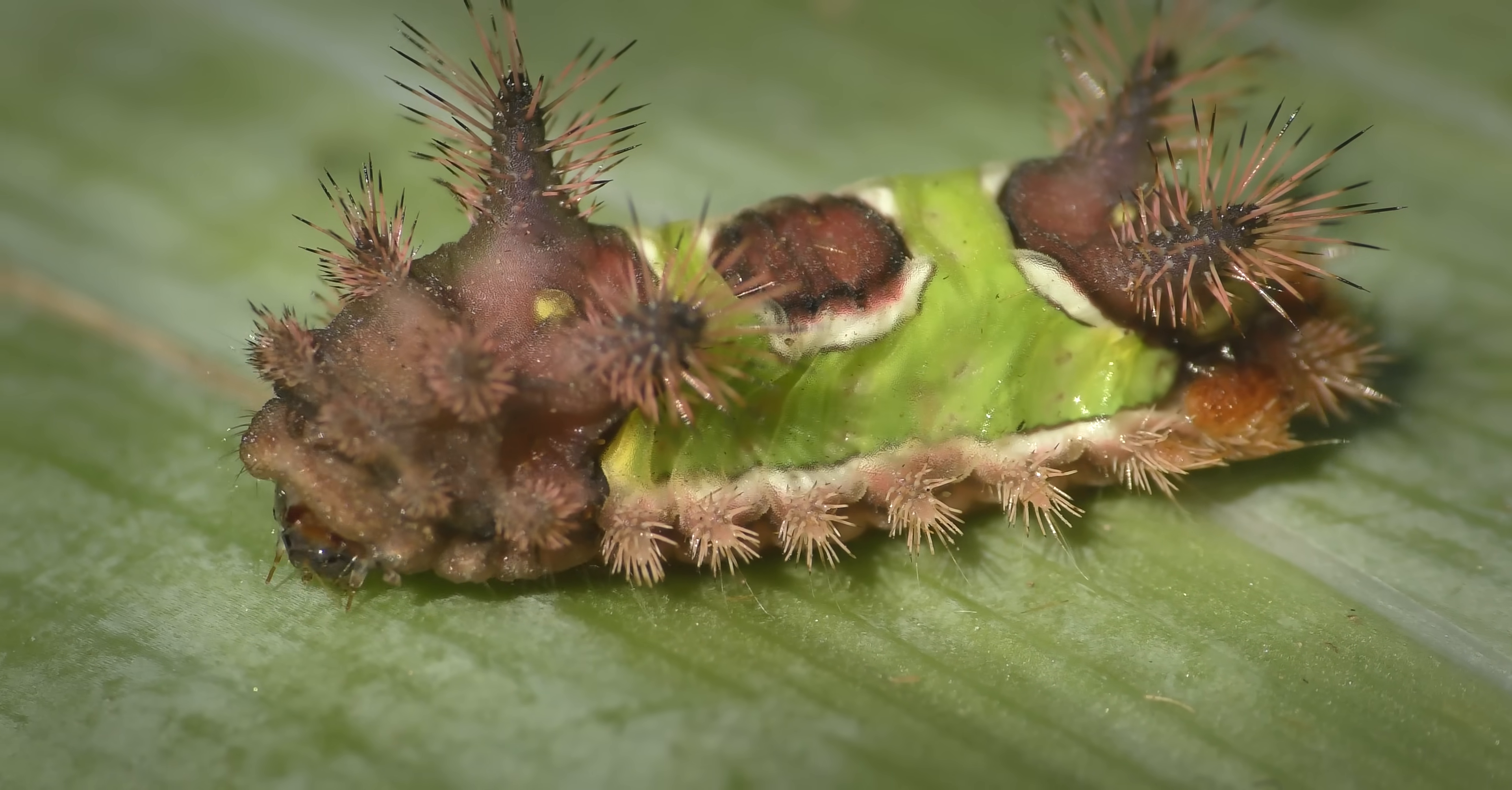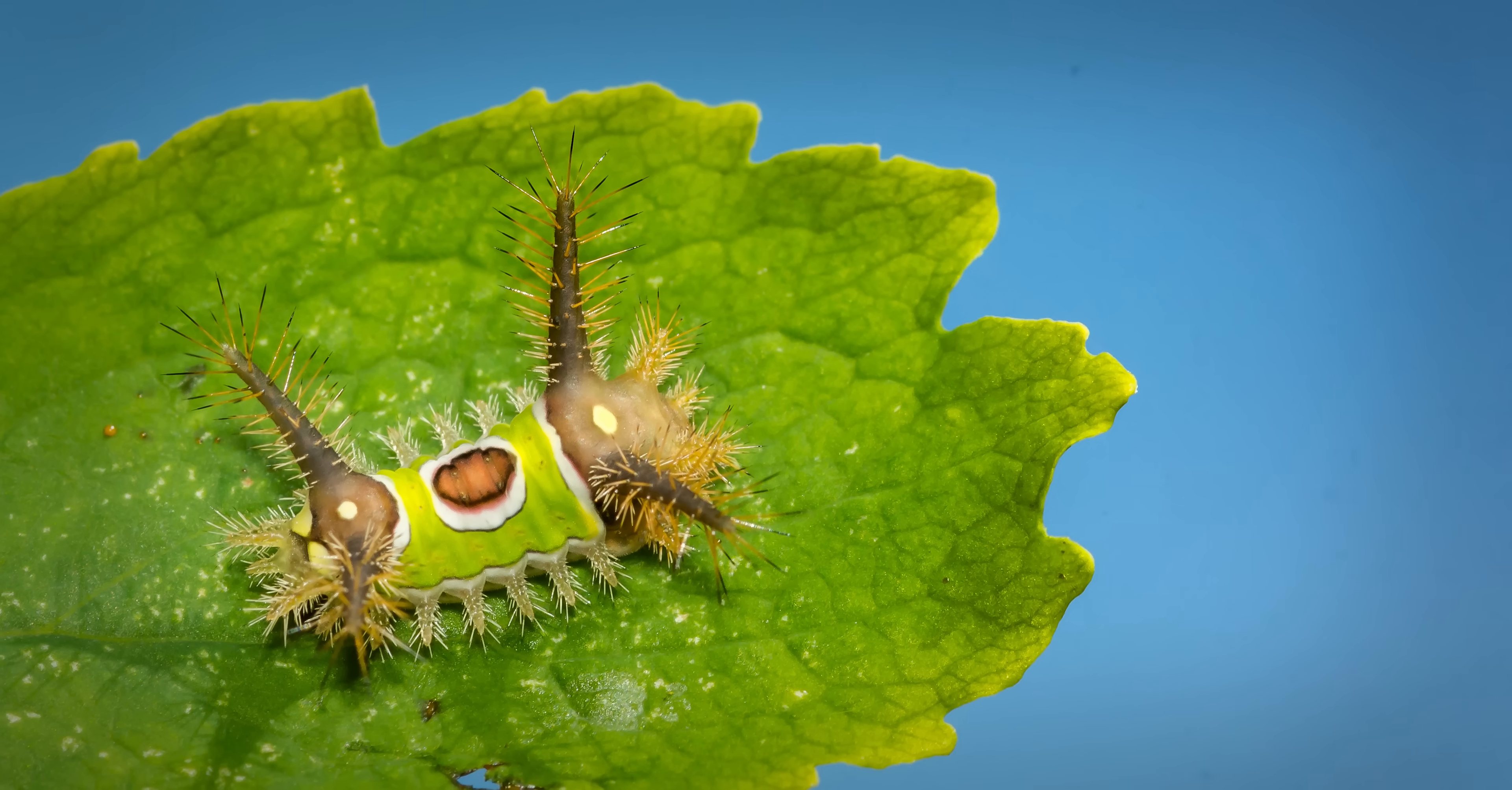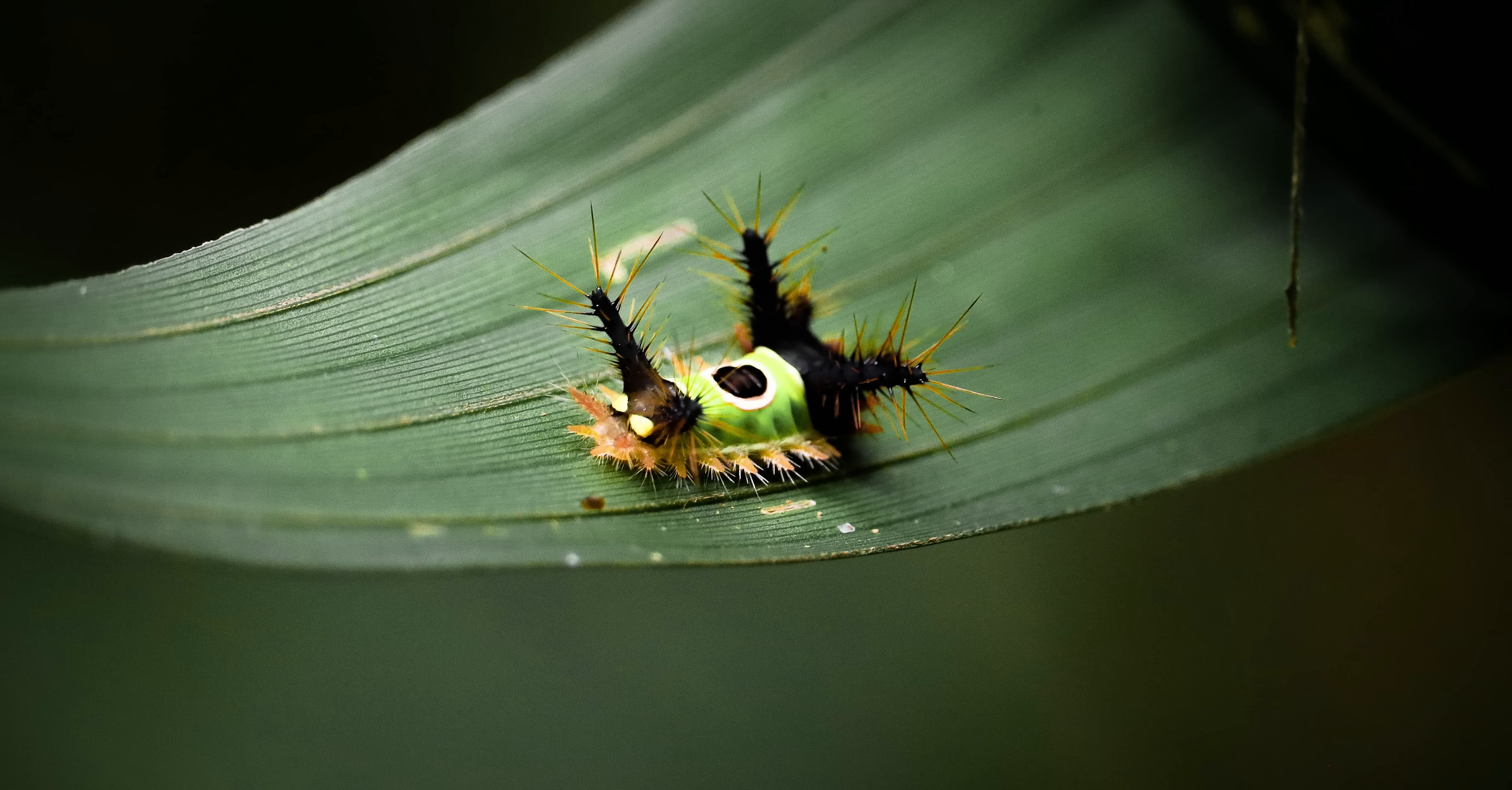Meet the Saddleback Caterpillar. He's small, bright, spiky, and absolutely not to be messed with. Found all across the eastern United States, as well as parts of Central America, you can commonly find these guys in your own garden at home. But while you might be tempted by that little brown patch, just begging for a boop, do not do it. If his lime green coloring wasn't enough to give you, and any other predator, a second thought, this little cowboy packs some serious heat in those spurs.